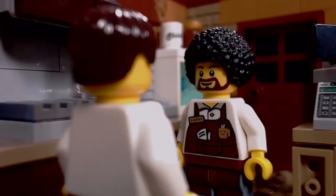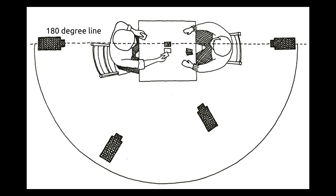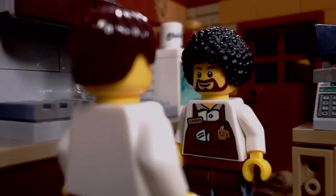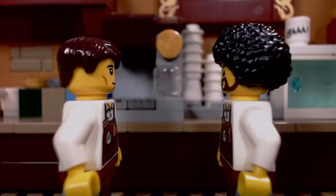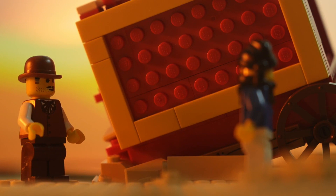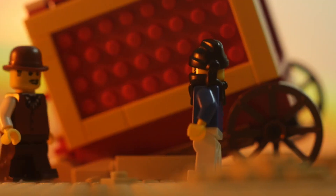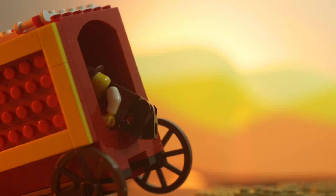180 degree rule. The 180 degree rule is essentially the same as just described, except it's more often used in conversations. The rule states that the camera should never cross the 180 degree line around a character, so as not to disorient the audience. In a back and forth conversation, the camera should basically stay on one side the entire time. However, it is possible to break the 180 degree rule as long as the audience sees there was a swap — if the camera or character visibly shows itself crossing the 180 degree line, the audience won't be disoriented upon the camera angles changing.